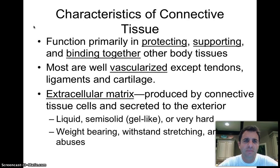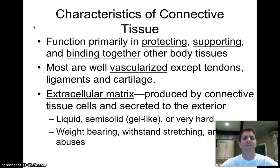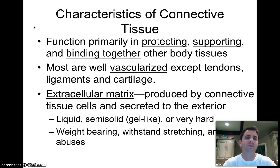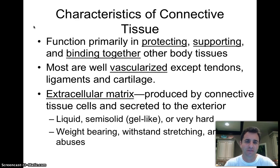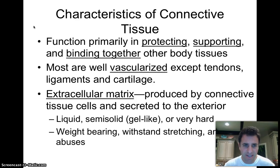Connective tissue's general purpose is to protect, support, and to hold together other tissues — and binding together is quite crucial. Most connective tissues are well vascularized, meaning they have very good blood flow. But some, like tendons and ligaments — tendons connect muscle to the skeleton and ligaments connect bone to bone — and cartilage are not well vascularized, which is unfortunate because if you damage them it's very difficult to heal them and you might need surgery.